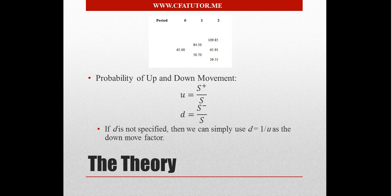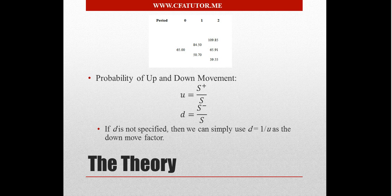And if d is not specified, if the probability of down movements is not specified, then we use the formula that's given over here.